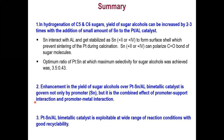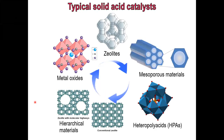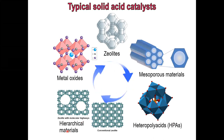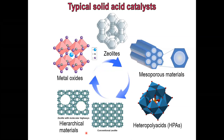Now let's move towards solid acid catalysts. In heterogeneous catalysis, there are supported metal catalysts and solid acid and base catalysts. Typical solid acid catalysts include zeolites, mesoporous materials, heteropoly acids, hierarchical zeolitic materials, and metal oxides. Regarding the nano scale in catalysis — supports having nano dimensions or supported metal catalysts in nano size — the nano scale ranges from one-tenth millionth to one-billionth of a millimeter.